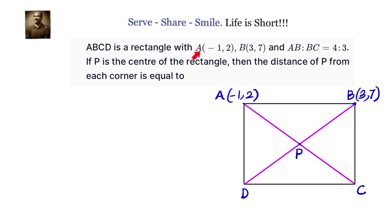ABCD is a rectangle with A coordinates as minus 1 comma 2, B 3 comma 7, and AB is to BC is 4 is to 3. If P is the center of the rectangle, then the distance of P from each corner is equals to how much?